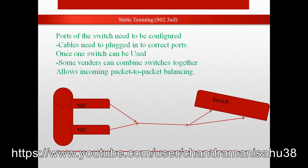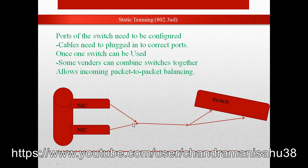So again, welcome to this video. This video covers static NIS streaming. Unlike dynamic, which creates load balancing automatically without any configuration, static cannot create anything automatically. With static, the ports of the switch need to be configured, cables need to be plugged into the correct ports, and only one switch can be used. Some vendors can combine switches together to allow incoming packets to be load balanced. Everything — ports, switch configuration, and cabling — must be manually configured by us. That is what makes it static.